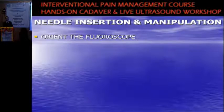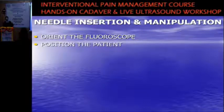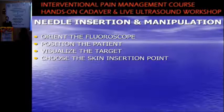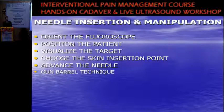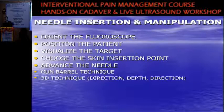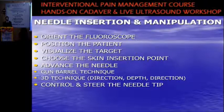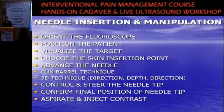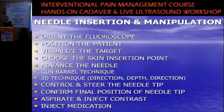In summary, the steps of needle insertion are: one, orient and position the fluoroscope; two, position the patient; three, visualize the target both in your mind's eye and on the fluoroscope; four, choose the skin insertion point; five, advance the needle using the gun barrel technique; six, use the 3D technique — direction, depth, direction — with AP, lateral, then AP views; seven, control and steer the needle tip; eight, confirm the final position by aspirating; nine, aspirate and inject contrast; ten, inject medication. This is how you perform an interventional procedure.